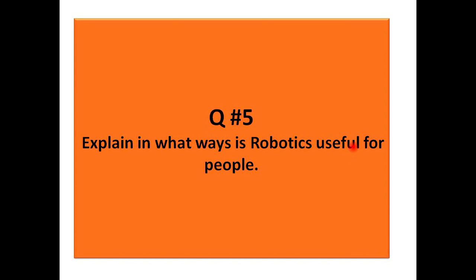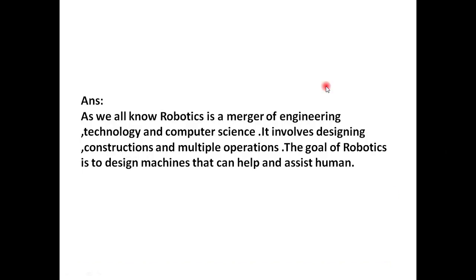Question number five is: Explain in what ways is robotic useful for the people. You will find the robots everywhere. As we all know, robotics is a merger of engineering, technology, and computer science. It involves designing, construction, and multiple operations. The goal of robotics is to design machines that can help and assist human.